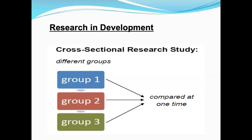One drawback of cross-sectional research is that environmental effects may have happened to one group but not another, giving inaccurate results. Another drawback is the groups could have started off very differently — for instance, a random group of fifteen-year-olds who were already tall at five would skew height data. The benefits are that it's quick and doesn't cost a lot; the drawbacks are the apples-to-oranges comparison.